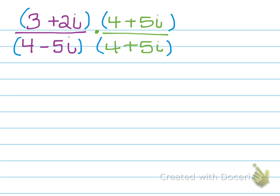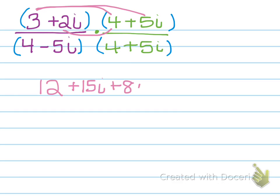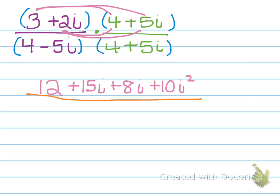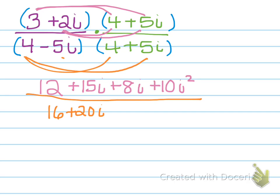Let's do the numerator first. We're going to have 3 times 4, so we get 12. Then 3 times 5i to get 15i. Then 2i times 4, which is 8i. And then 2i times 5i, which is positive 10i squared. Now for the denominator: 4 times 4 is 16, 4 times 5i is 20i, negative 5i times 4 is negative 20i, and negative 5i times positive 5i gives us negative 25i squared.